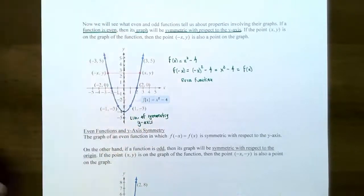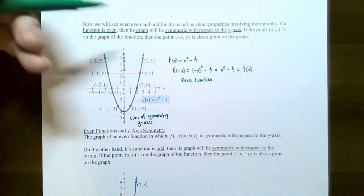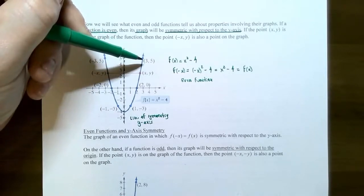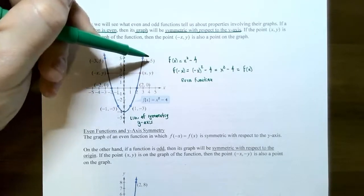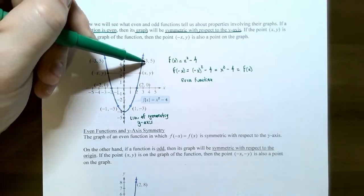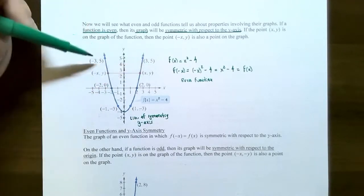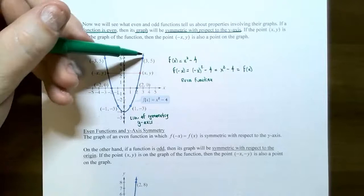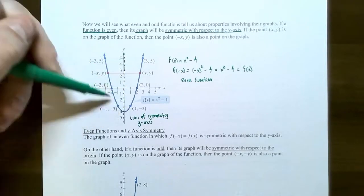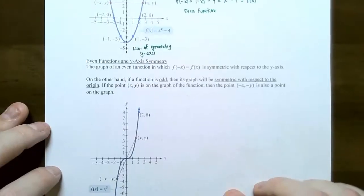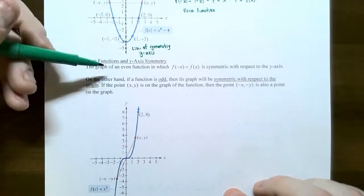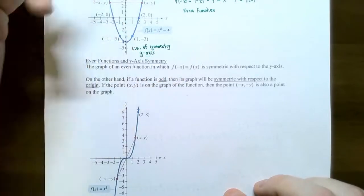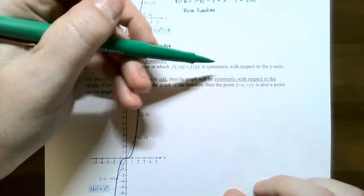This is called y-axis symmetry. For example, if you have the point (3, 5), the even function test says replacing x with negative x keeps the y values the same. So (−3, 5) is also on the graph. This should be true for every single x value in the domain — that's why you have this symmetry. The statement is: if a graph is an even function satisfying f(−x) = f(x), the graph will always be symmetric with respect to the y-axis.